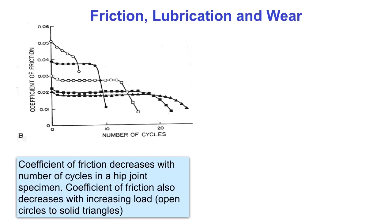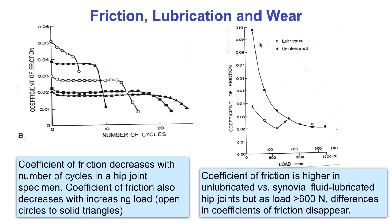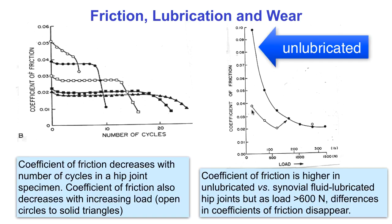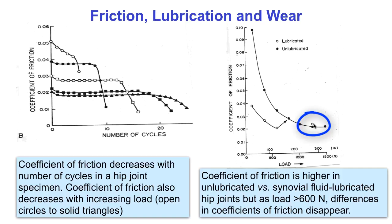The coefficient of friction decreases with the number of loading cycles in this experiment in a hip joint. Note that the coefficient of friction also decreases with load, as more synovial fluid is squeezed out of the joint tissue. The coefficient of friction is higher in unlubricated than lubricated joints. However, as the load increases, the difference becomes smaller and eventually disappears, presumably because synovial fluid is being squeezed out of the unlubricated cartilage.